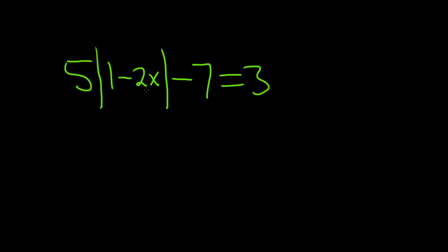In this problem, we're going to solve this absolute value equation for the value of x. So to do that, we'll start by isolating the absolute value. So it looks like we'll start off by adding 7 to both sides.